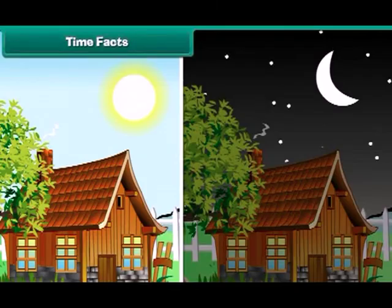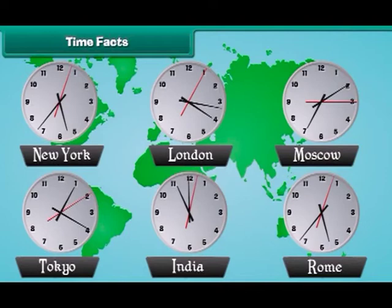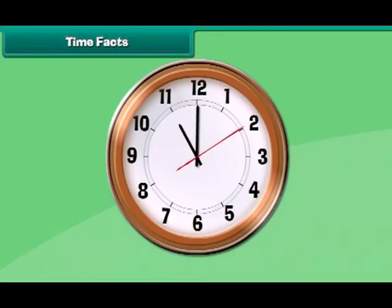As we just saw, at some places it is daytime and at others it may be night. Time changes when we move across the world. A clock is used to read time. A clock has three hands: the short hand tells about the hour, the long hand tells about minutes, and the thin hand tells about seconds.